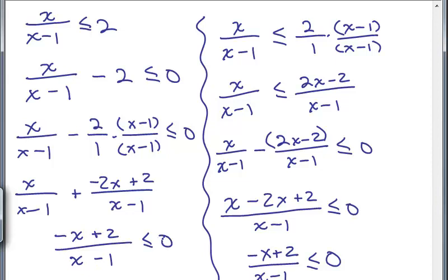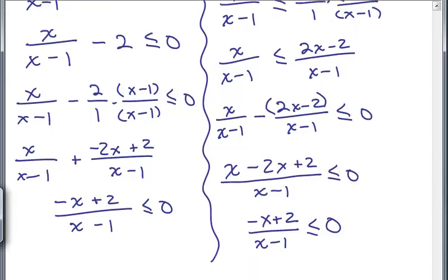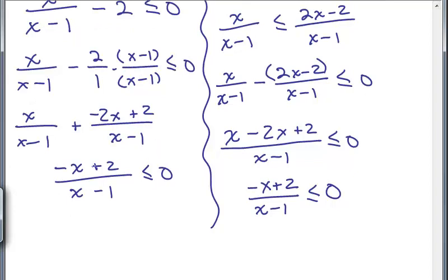Now if I add the numerator, notice you're still going to get x plus negative 2x plus 2, so you're still going to get in the numerator negative x plus 2 over x minus 1 is less than or equal to 0. So there's a lot of algebra just to do that second step, which is to make it over a single fraction, make a single fraction on one side with zero on the other side. So now from here, let's see where we go. We're going to go ahead and I think I'm going to move this onto another page so we have a little bit more space.